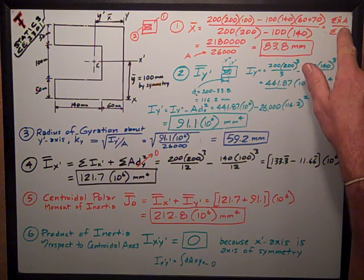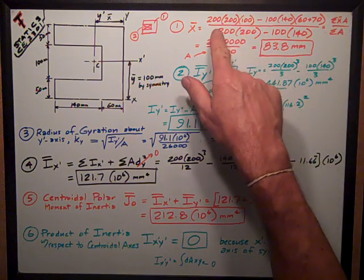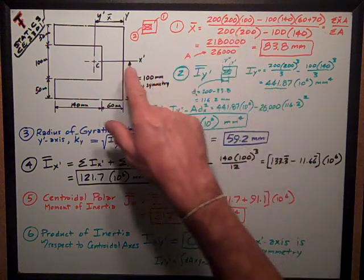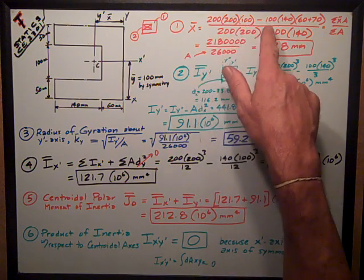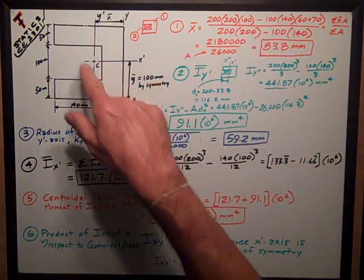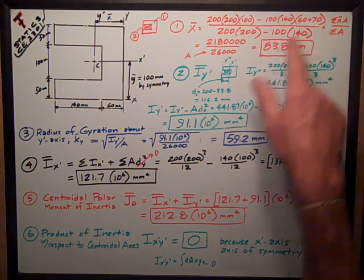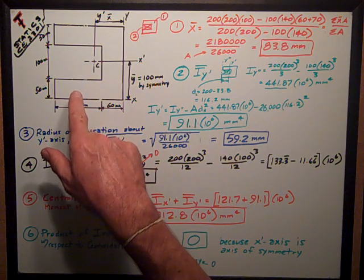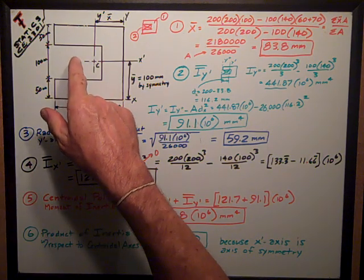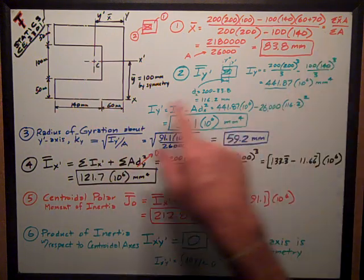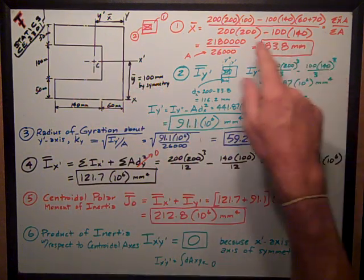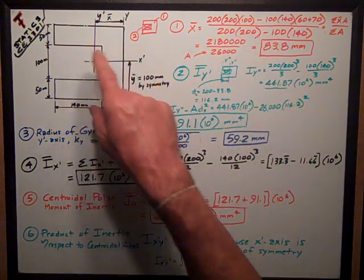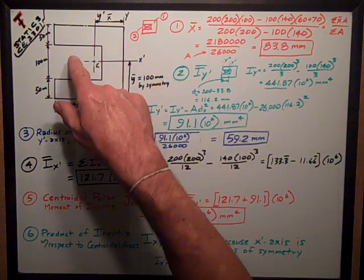This is the sum of the x tilde a's and that's the area is 200 by 200 and its centroidal distance from the right side is 100 minus 100 times 140 minus because it's the cutout area times 60 plus 70. The 60 is this distance here, 70 is half of the 140 width of it, so that's the centroidal distance of that little piece. And reference from this y-axis. And the areas are 200 by 200 for the big square minus 100 times 140.